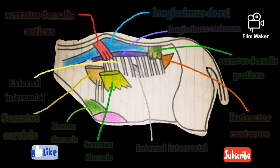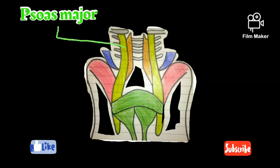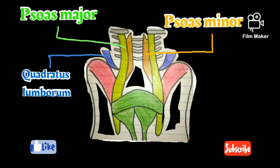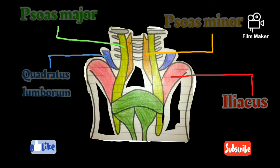Next we will discuss about muscles of the sublumbar region. The first muscle is Psoas major, which is a long muscle. Next is Psoas minor. The next muscle is Quadratus lumborum, which is a thin muscle placed over the ilium. That was all for this video.